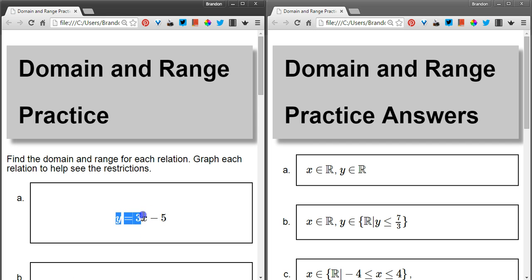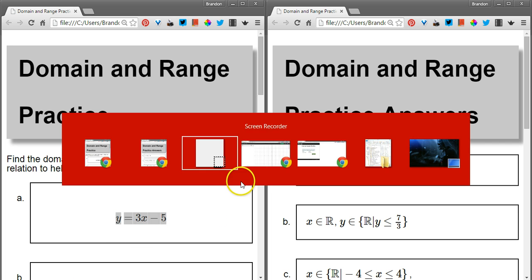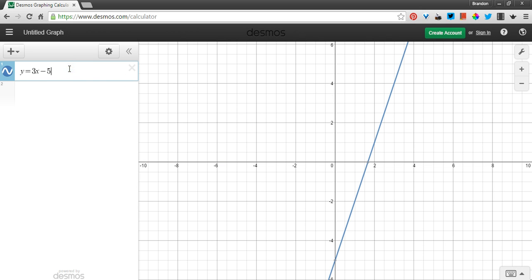We're going to use Desmos, the online graphing calculator service. I'm going to paste in that first one. This is the equation for a line. The independent variable is x, the dependent variable is y and that's going to be true for all the ones we do here today. This line goes infinitely up and to the right, infinitely down and to the left.